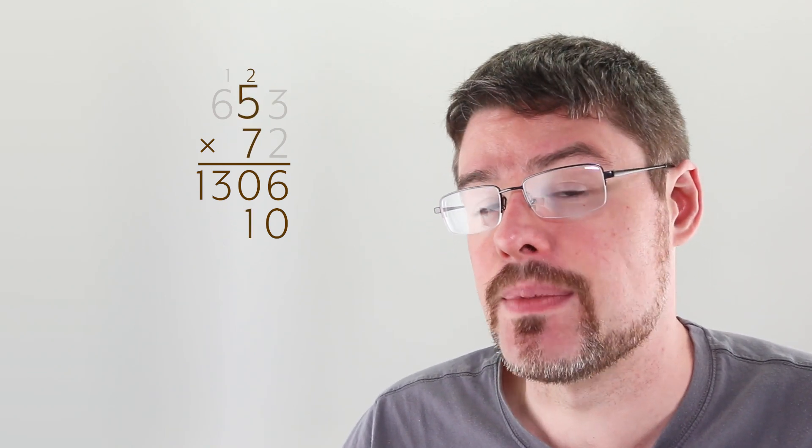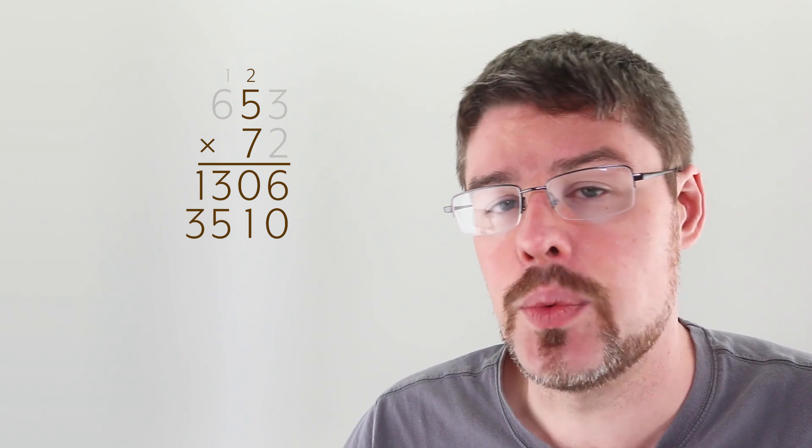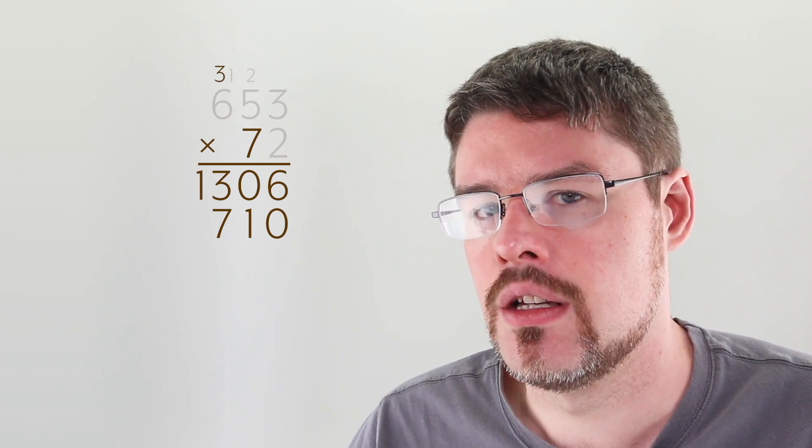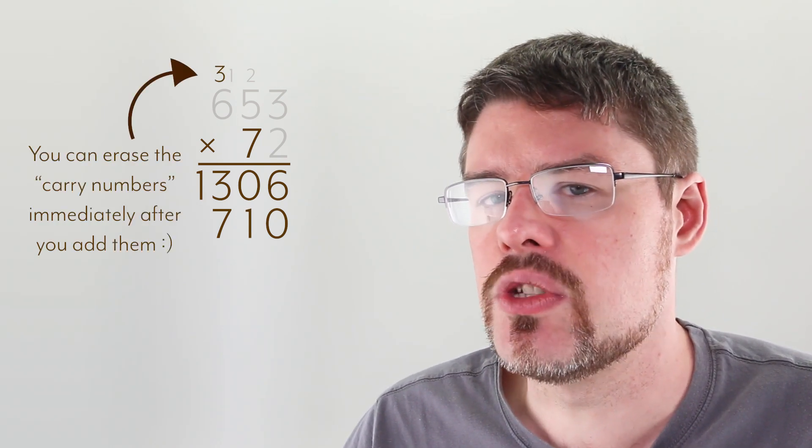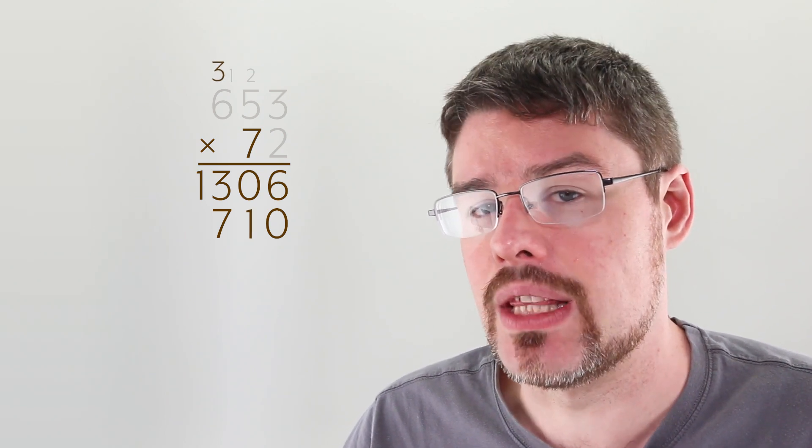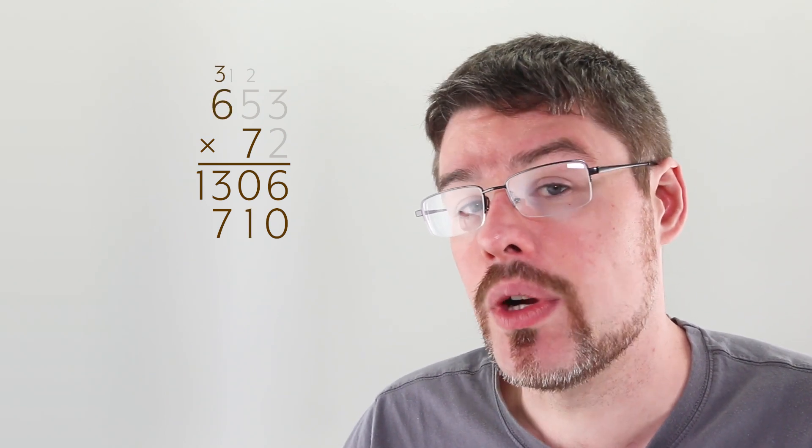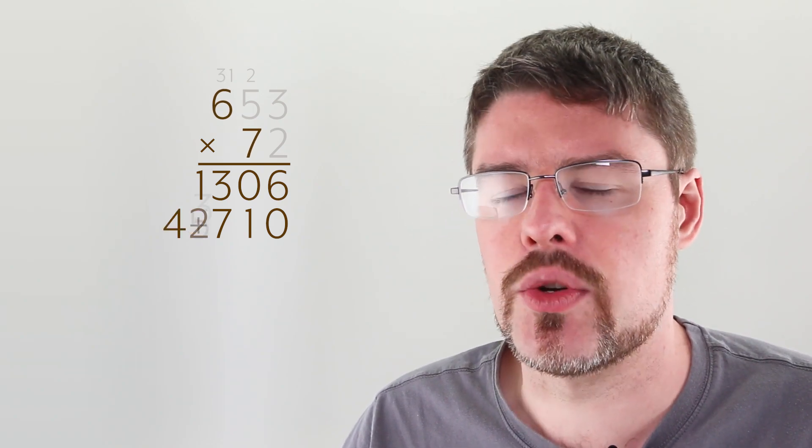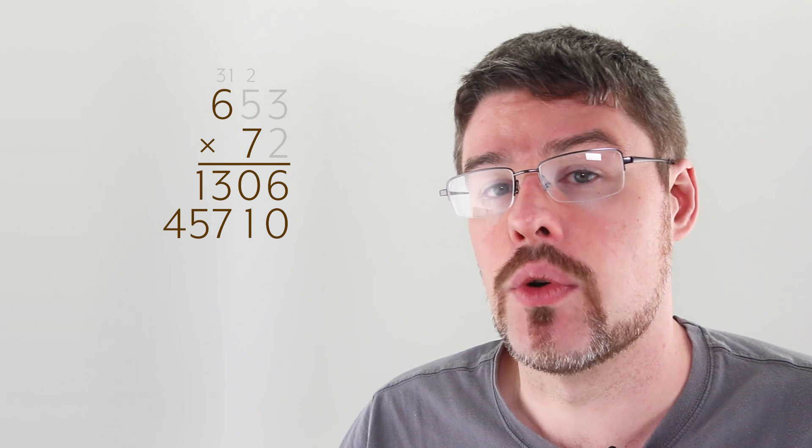We're going to multiply the 7 times the 5, giving us 35, and we'll add the 2 that we carried earlier to that, giving us 37. This now gives us another carry of 3, so we'll put the 3 here. And don't worry about the fact that there used to be a 1 there. The number we're really thinking about is that 3 that we've just carried. Now we're going to multiply the 6 and the 7, giving us 42, and of course we'll add the 3 we carried. So that's going to give us 45.